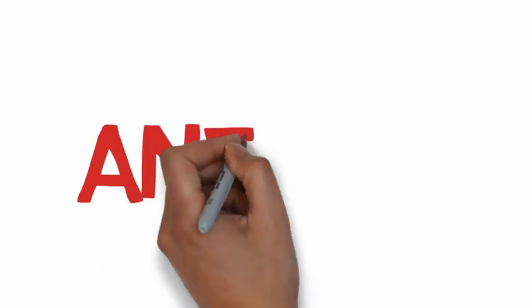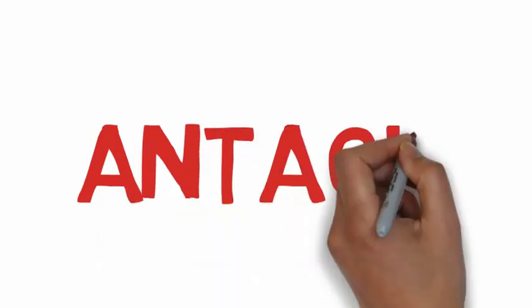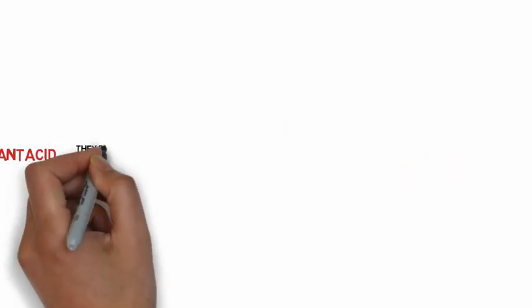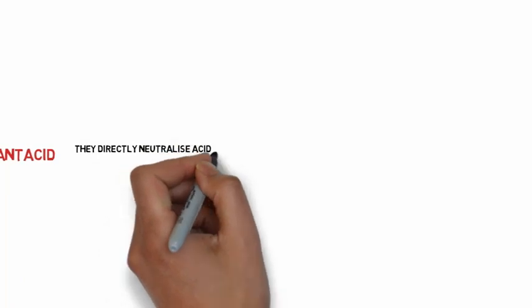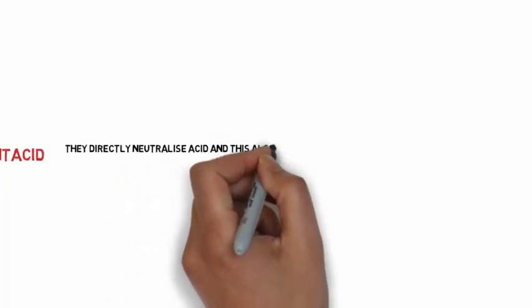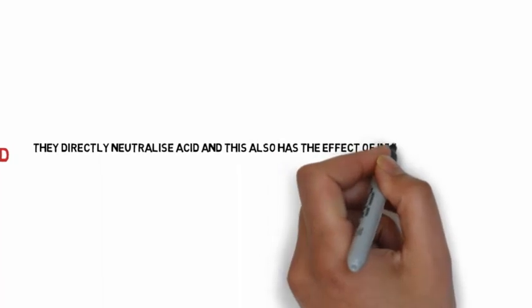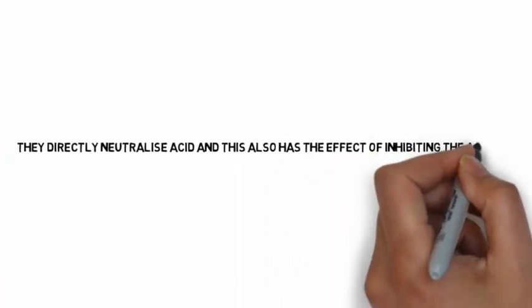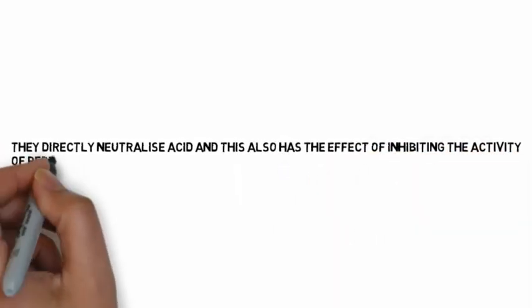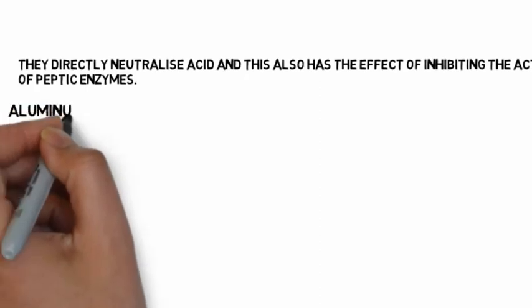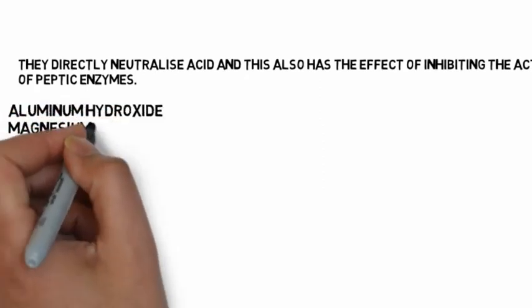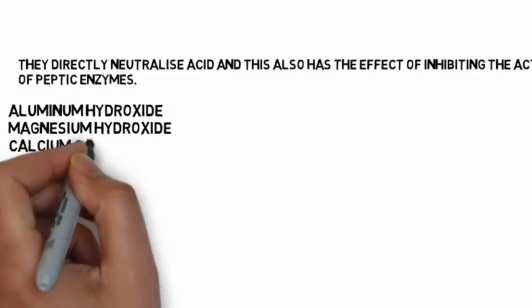The treatment of peptic ulcer includes the use of antacids. Antacids are the simplest way to treat the symptoms of excessive gastric acid secretion. They directly neutralize acid, which also has the effect of inhibiting the activity of peptic enzymes, which practically ceases at pH 5. Commonly used antacids are aluminum hydroxide, magnesium hydroxide either alone or in combination, calcium carbonate and sodium bicarbonate.